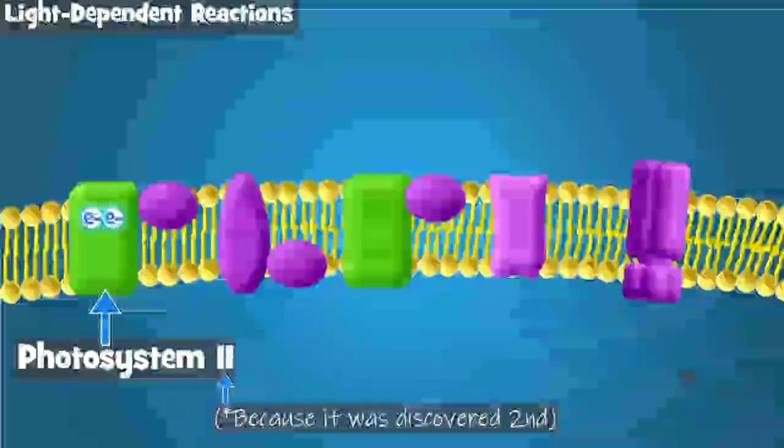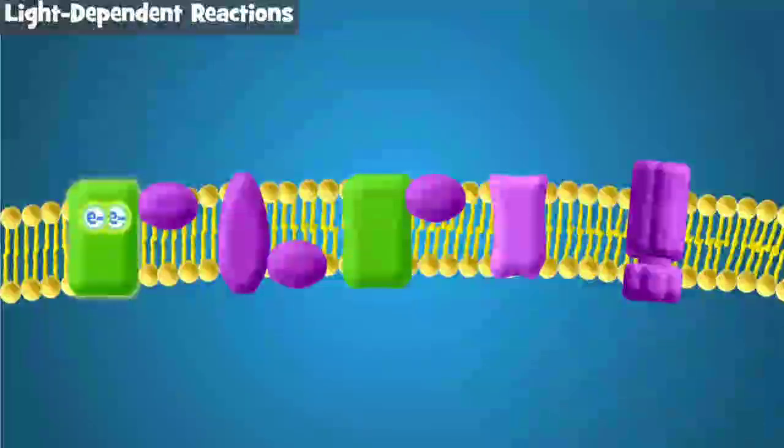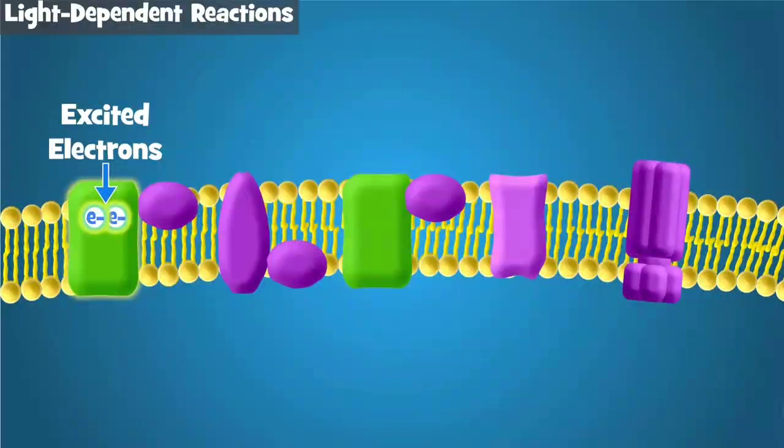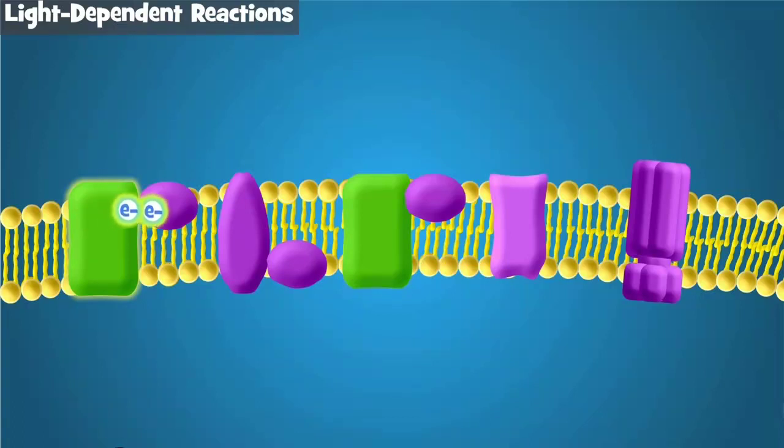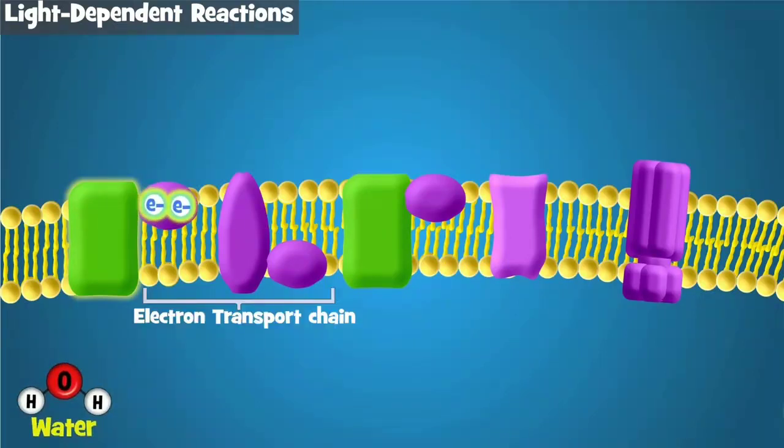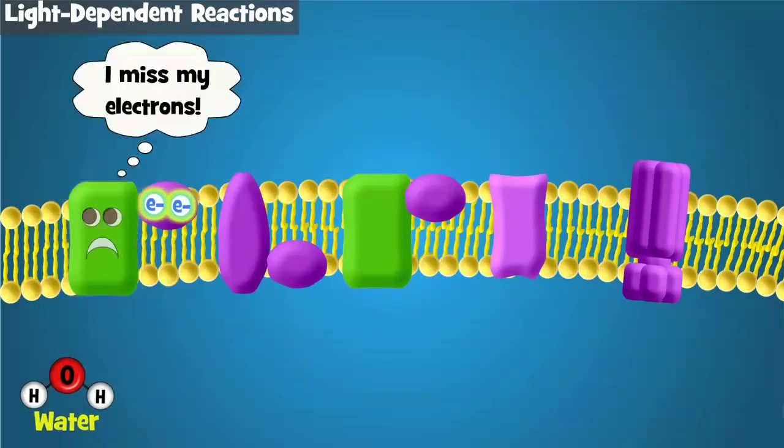When photosystem 2 absorbs light, electrons in chlorophyll gain energy, or get excited, from the light. These excited electrons leave chlorophyll and move to something called an electron transport chain. But, since chlorophyll lost those electrons, they need to be replaced.